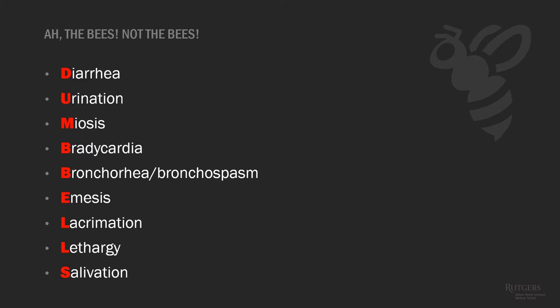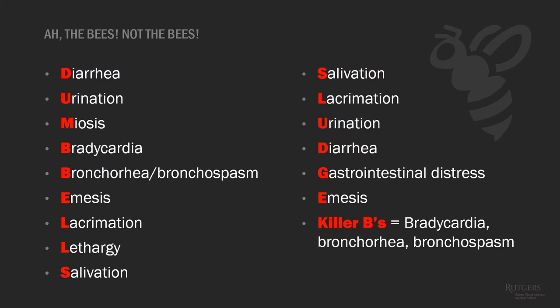The mnemonic for cholinergic excess is DUMBBELLS: Diarrhea, Urination, Miosis, Bradycardia, Bronchorrhea and Bronchospasm, Emesis, Lacrimation, Lethargy, and Salivation. Remember that the killer Bs — bradycardia, bronchorrhea, and bronchospasm — are your main resuscitation endpoints and main life threats. Those are the things that will kill your patient with this toxidrome. The killer Bs mnemonic is more helpful because it emphasizes what is most dangerous in cholinergic poisoning.